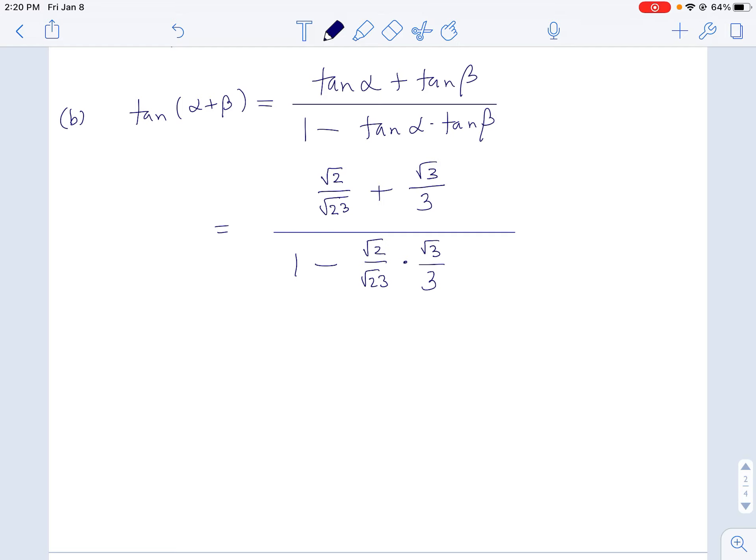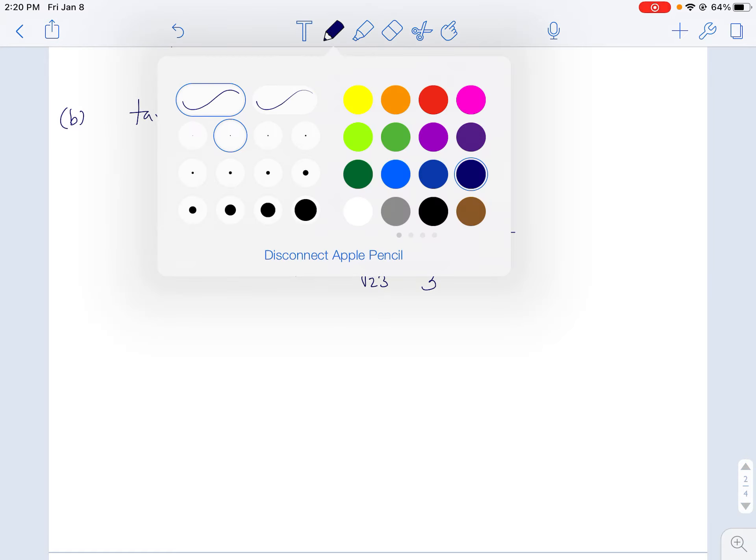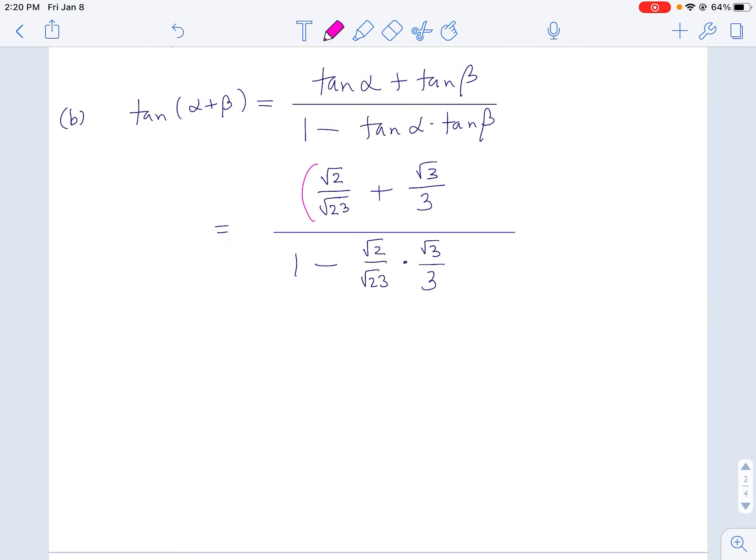And of course, when you have fractions within fractions, you got to multiply top and bottom by the least common denominator of all the fractions. And the least common denominator of all the fractions is 3 root 23. So I got to multiply top and bottom by that.